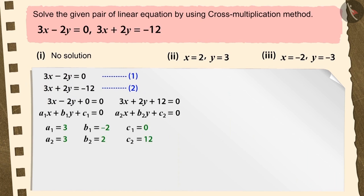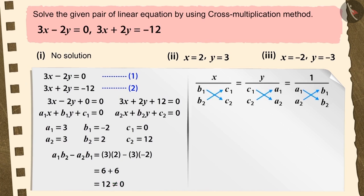Let's find out all the values of the coefficients and constants and let's test the condition a1b2 minus a2b1 not equal to 0. After which we will substitute these values in the cross multiplication method.